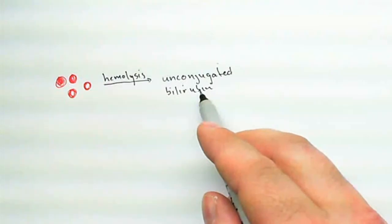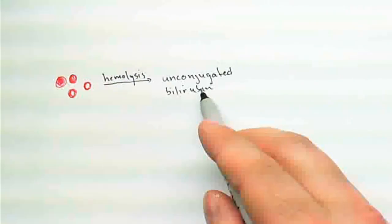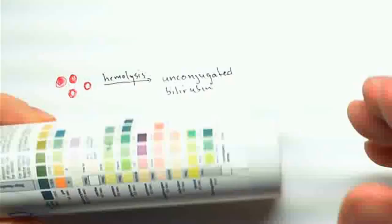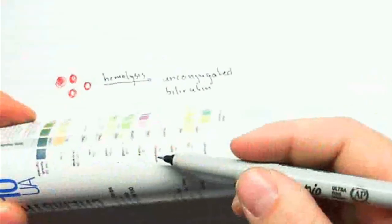Two things about this bilirubin are, one, it's insoluble in water, which means it can't just float through the water. The second thing is it's bound up to albumin, and since albumin is not normally filtered into the urine, this won't be filtered into urine either. So this is not the type of bilirubin that we're actually testing for on our urine strip.